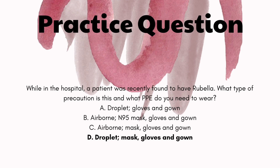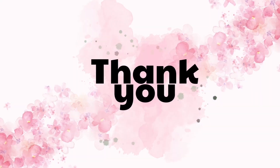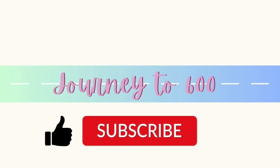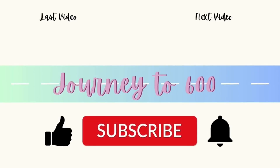You can refer back to the precaution chart where the last column lists all diseases and illnesses with their precaution type. The correct answer is D — droplet. Rubella falls under the droplet precaution. Thank you so much for joining us on Journey to 600. Please like, subscribe, and turn on your notifications so you know when we upload another lesson and practice questions.